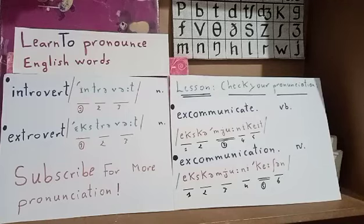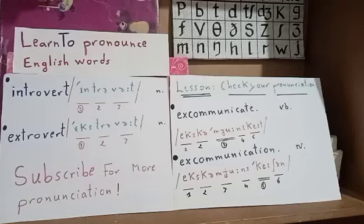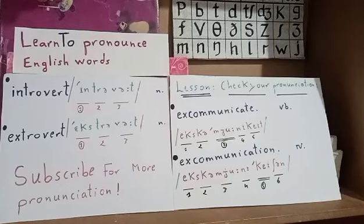The first word is 'introvert.' It's a noun with three syllables, stress on the first syllable: in-tro-vert. We say 'an introvert.' It means a shy, reticent, reserved person. I repeat: introvert — three syllables, stress on the first syllable.